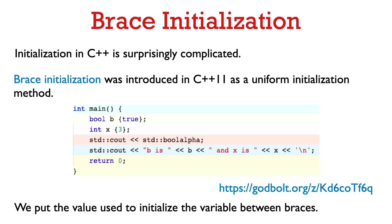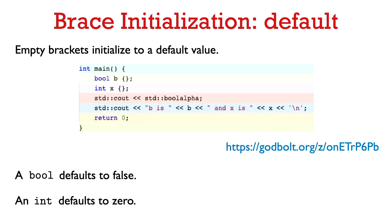Brace initialization is easy to use. You just put the value you want to initialize to between brackets. So this code will initialize B to be true, and the next line will initialize X to have the value 3. If we don't put anything between the brackets, then the variable is going to be initialized to a default value. For most numeric built-in types, this is going to be like 0 initialization. So a Boolean is going to default to false, and an int is going to, in this case, will be initialized with the value 0.